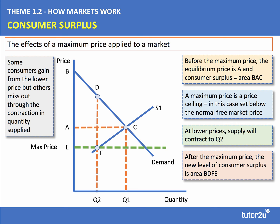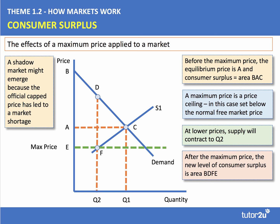Some consumers have gained from the maximum price because they're now getting their product at a cheaper price than before, but others miss out because of the contraction in quantity supplied from Q1 to Q2. Often when we have a maximum price, a shadow market might emerge because the official capped price has led to a market shortage equal to the gap between the demand and supply curves at price E. Shortages can lead to the emergence of parallel markets where people trade at unofficial prices.